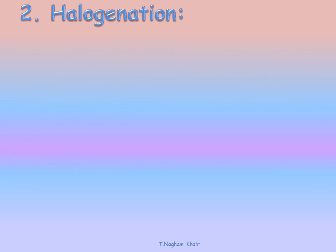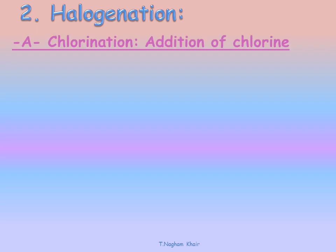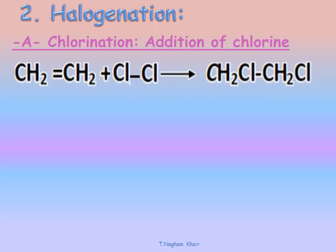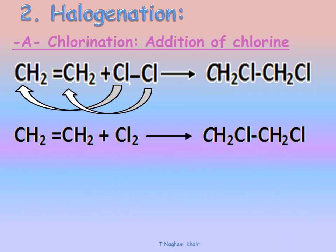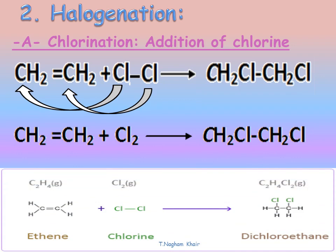The second kind of addition reaction is halogenation — the addition of a halogen, which is either chlorine or bromine. First, we will deal with chlorine; this is called chlorination. Ethene CH2=CH2 reacts with Cl2. The first Cl will bond to the first carbon atom after breaking the double bond, and the second Cl will bond to the second carbon atom, giving CH2Cl-CH2Cl, a saturated hydrocarbon. We can write the reaction using condensed structural formula or structural formula.